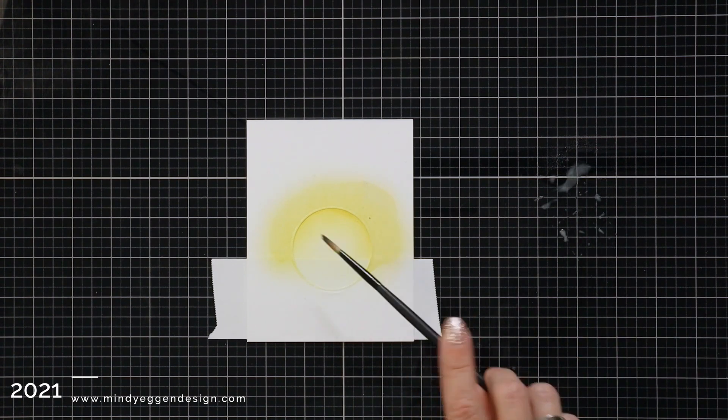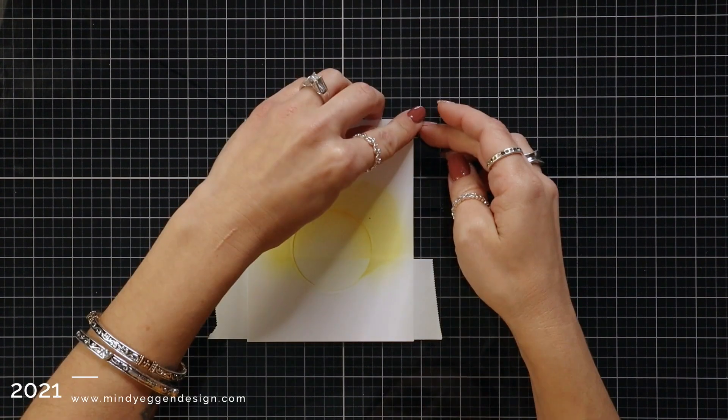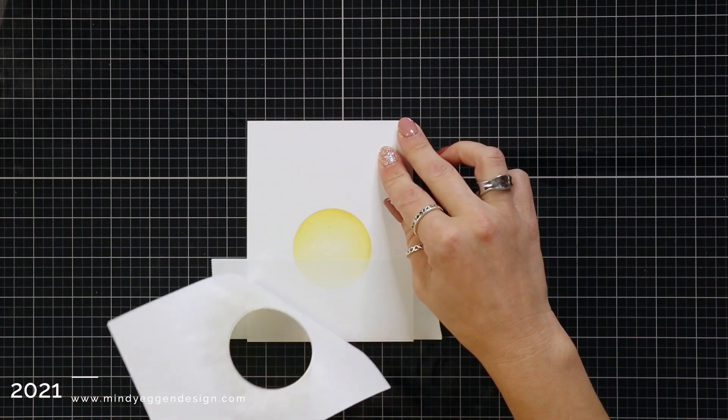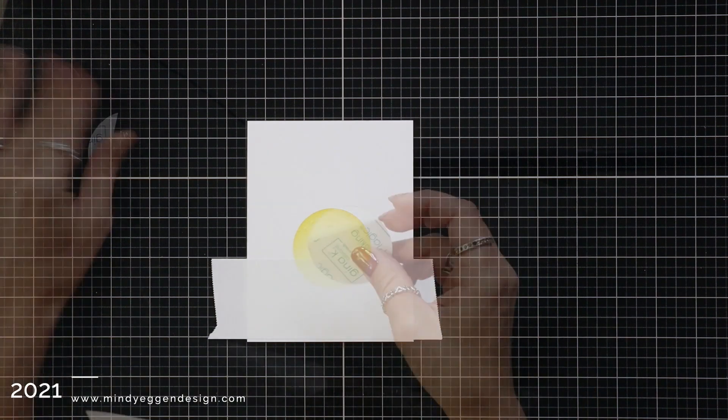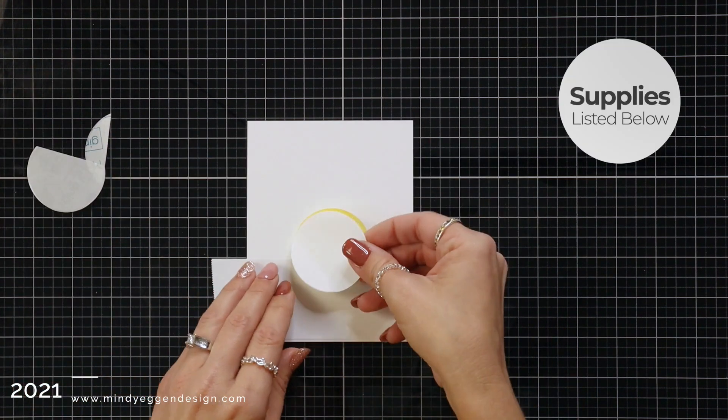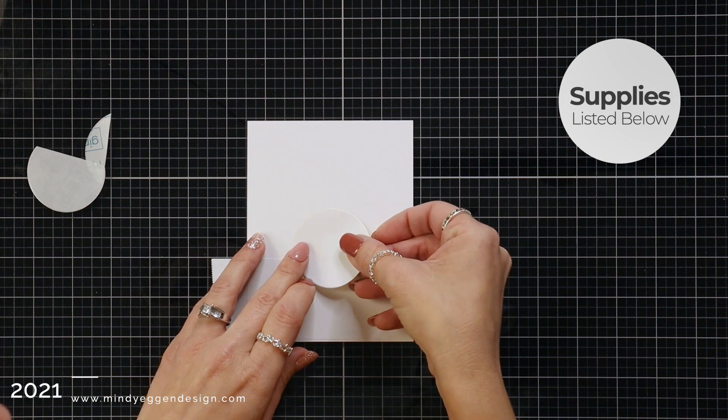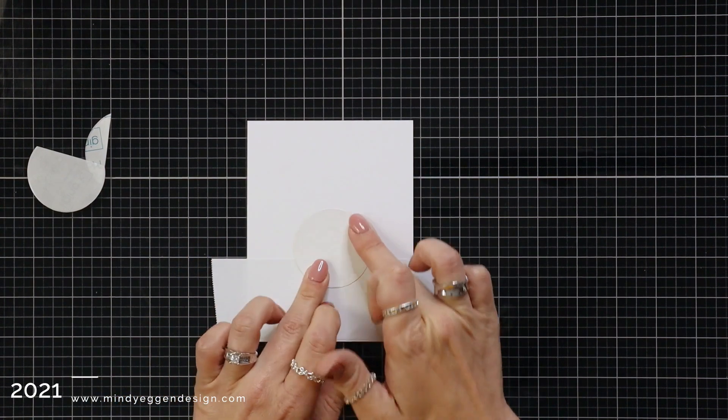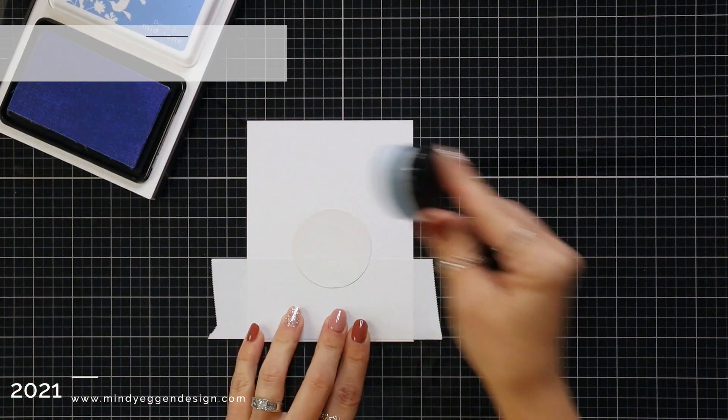I dabbed up any excess water with a paper towel and then I'm going to carefully remove this top mask. Now we barely used it so you can save this for a future card. Leaving that post-it tape still there, I'm adding on the die cut masking magic circle. This is covering our moon.